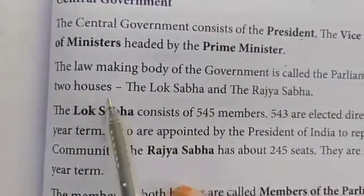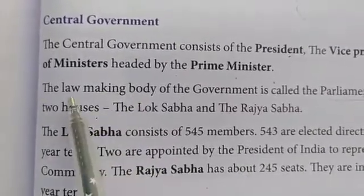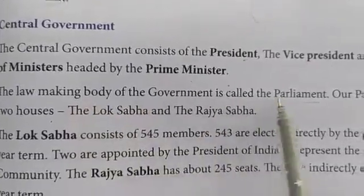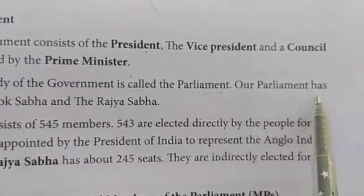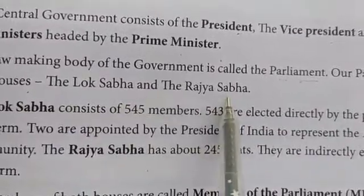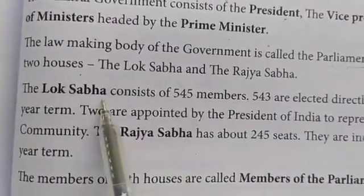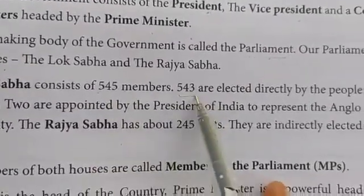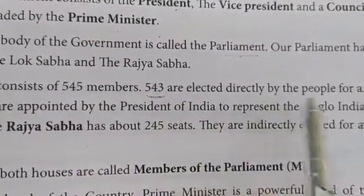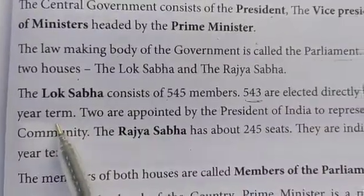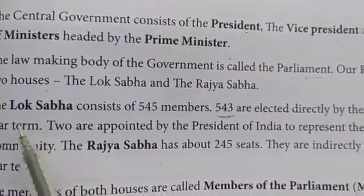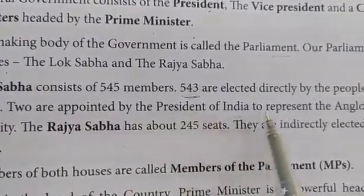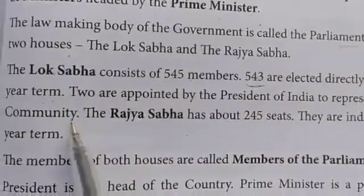Our parliament has two houses. Law making means deciding what should be followed in the country — all this will be made in the parliament. One house is Lok Sabha and the other is Rajya Sabha. In Lok Sabha, 545 members will be there. 543 members are elected by the people for every five years, and two are appointed by the president to represent the Anglo-Indian community.